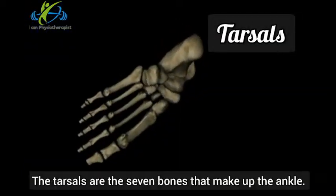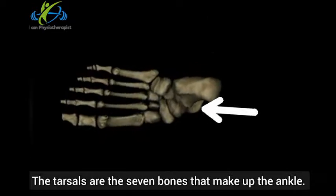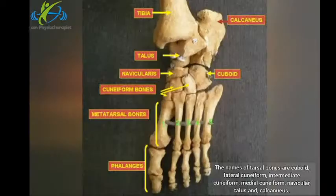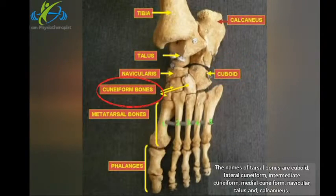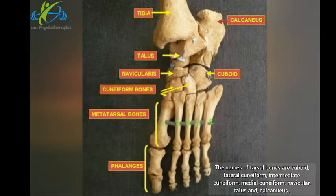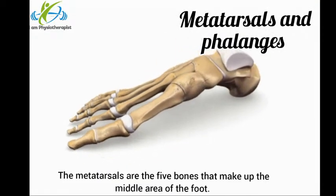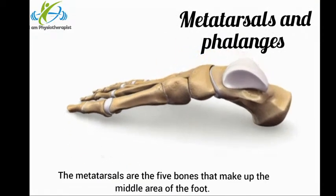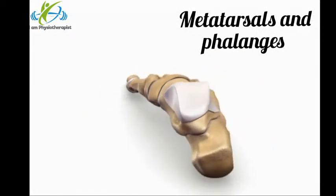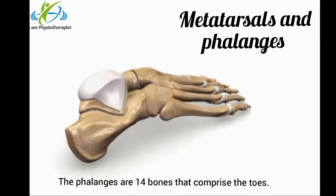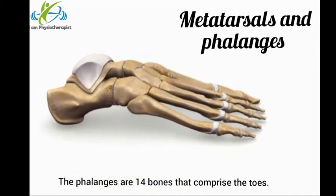Tarsals: The tarsals are the seven bones that make up the ankle. The names of the tarsal bones are: cuboid, lateral cuneiform, intermediate cuneiform, medial cuneiform, navicular, talus, and calcaneus. Metatarsals: The metatarsals are the five bones that make up the middle area of the foot. Phalanges: The phalanges are 14 bones that comprise the toes.